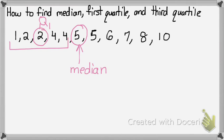Then I will look at the numbers greater than my median, which is all of these numbers up here. And then find the median again, which in this case is seven.